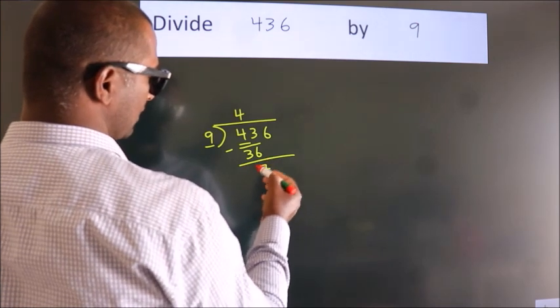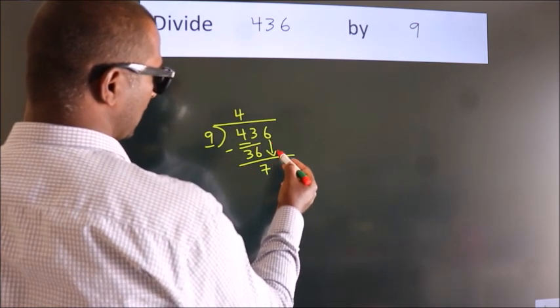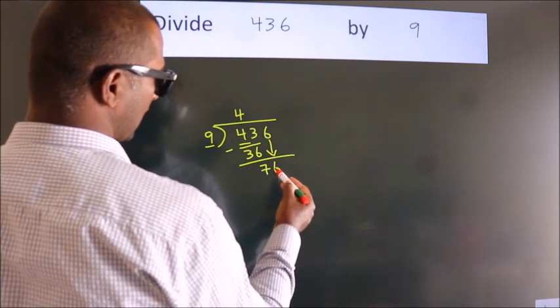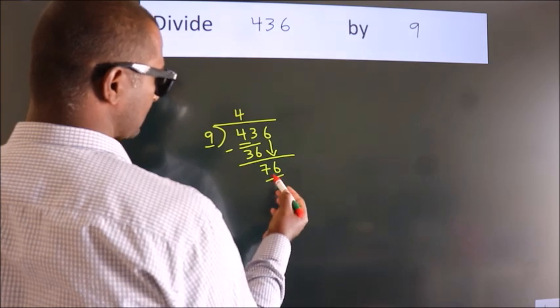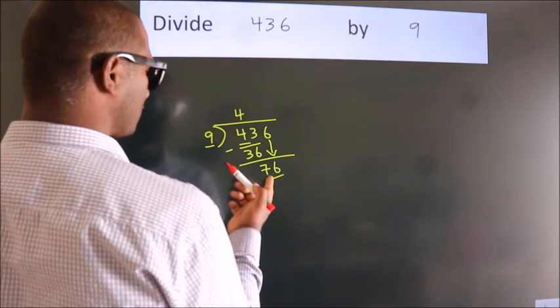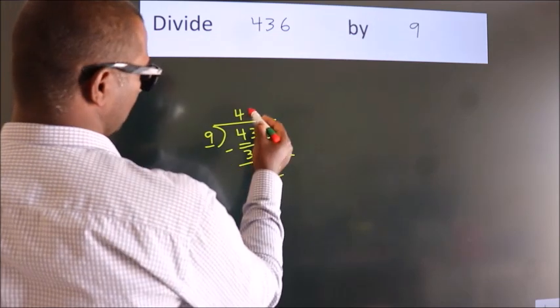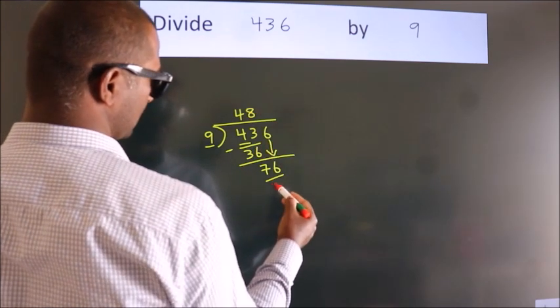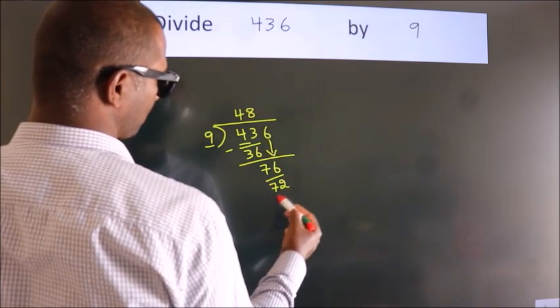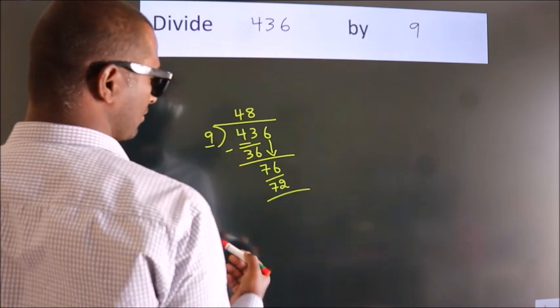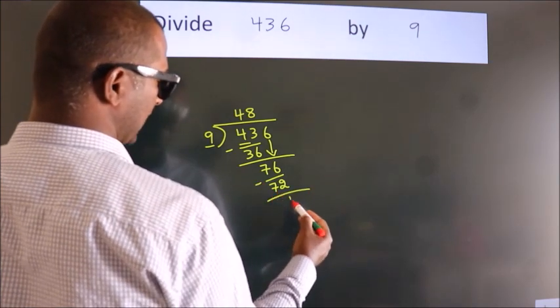After this, bring down the next number. So 6 down, making 76. A number close to 76 in the 9 table is 9 times 8 equals 72. Now we subtract and get 4.